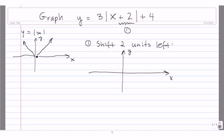So now, instead of our vertex being at the point (0,0), we have to go 2 over to the left-hand side. That means the x-coordinate is going to move from 0 to negative 2.